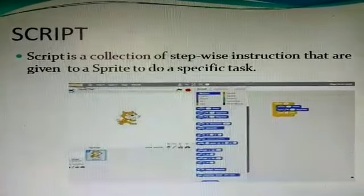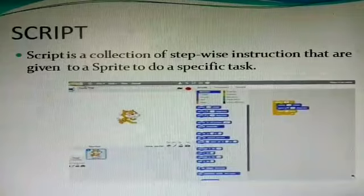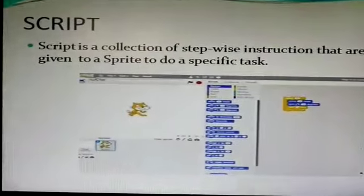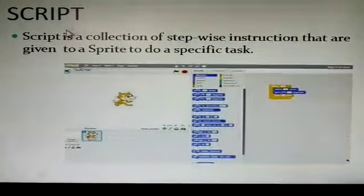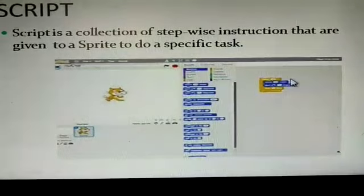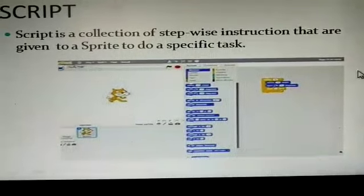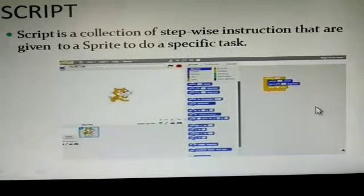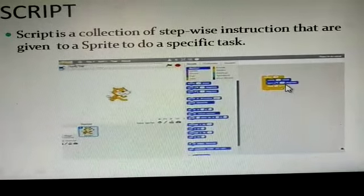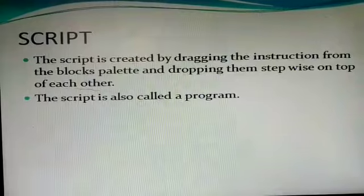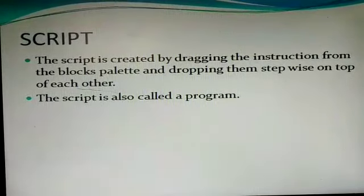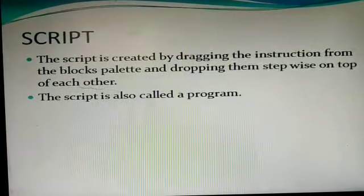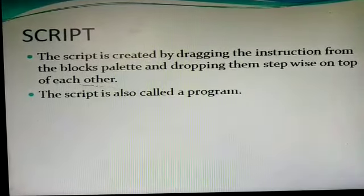A script is a collection of stepwise instructions that are given to the sprite to do a specific task. Here, with the help of the cursor, you can see this is our script, and this is our script area. The script is created by dragging instructions from the blocks palette and dropping them stepwise on top of each other. The script is also called a program in Scratch.